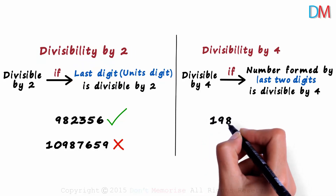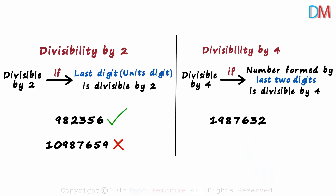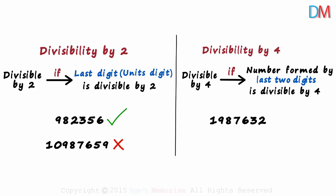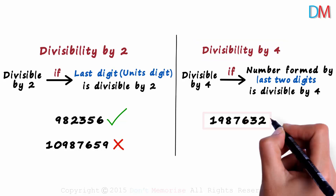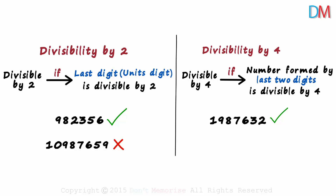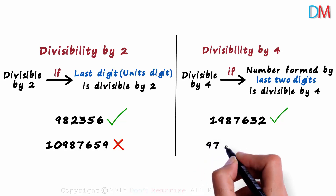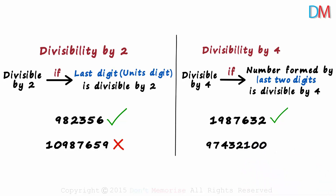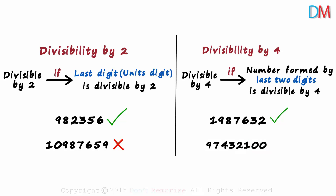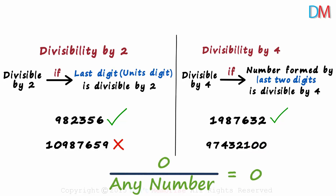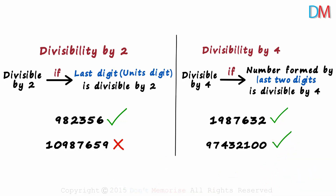So is 1,987,632 divisible by four? As it's a divisibility by four test, we need to look at the last two digits. The number formed by the last two digits is 32. Is 32 divisible by four? Yes, so this big number is also divisible by four. Here's the next one: is 97,432,100 divisible by four? The last two digits are zero and zero. The number formed by the last two digits is zero, and we learnt that zero is divisible by any number. Hence this number is also divisible by four.